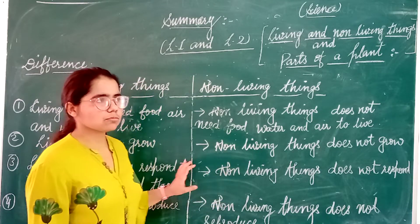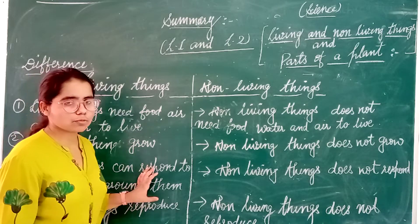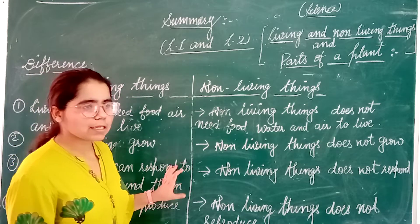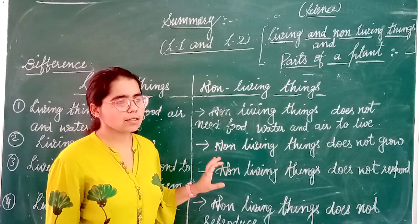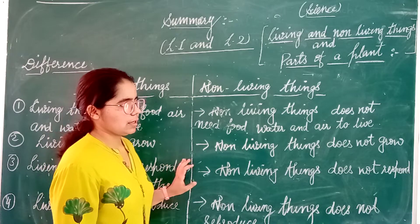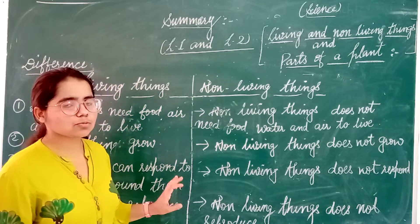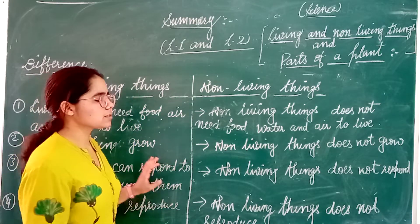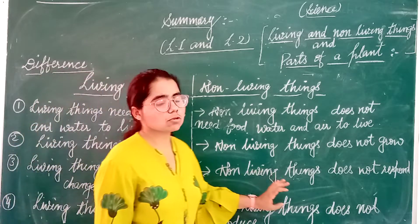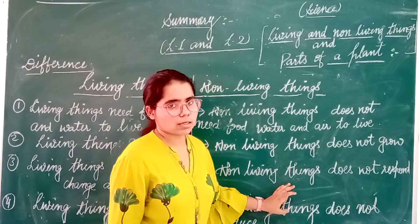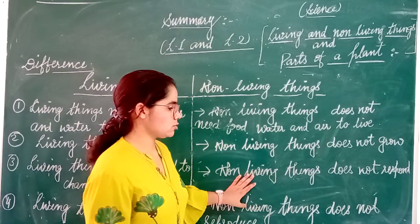We are all human and we have five sense organs in our body: eyes, ears, skin, nose, and tongue. From these sense organs we can respond to external stimuli. But non-living things do not respond — they do not have sense organs.